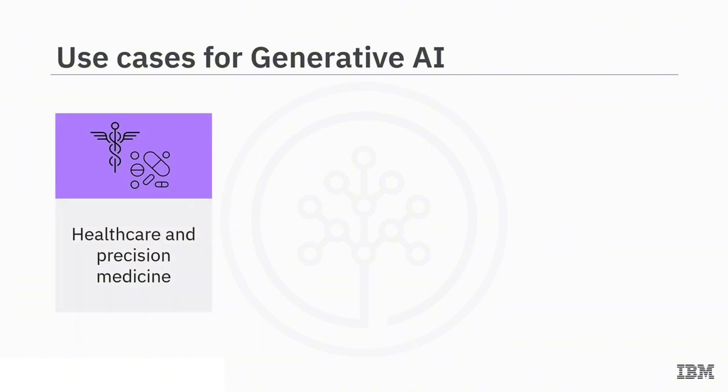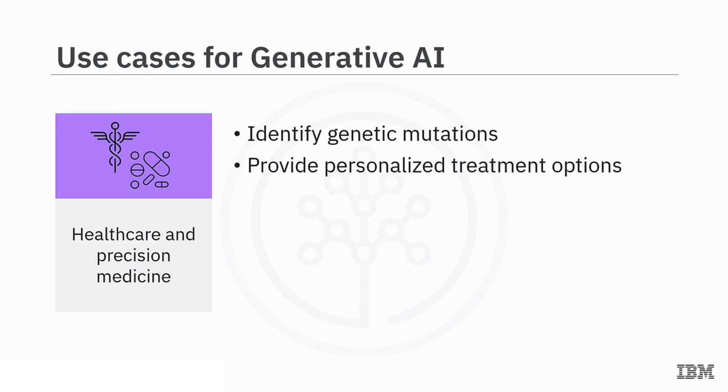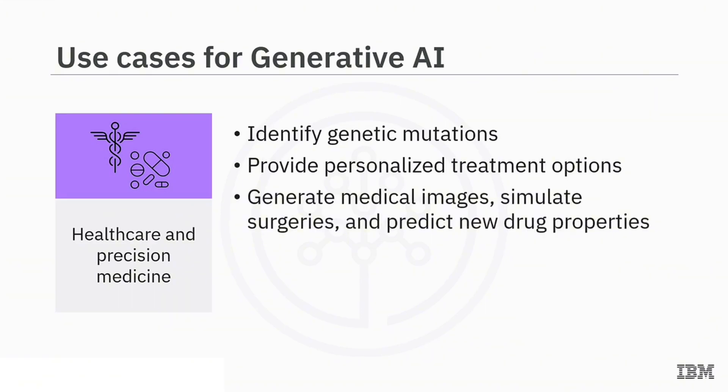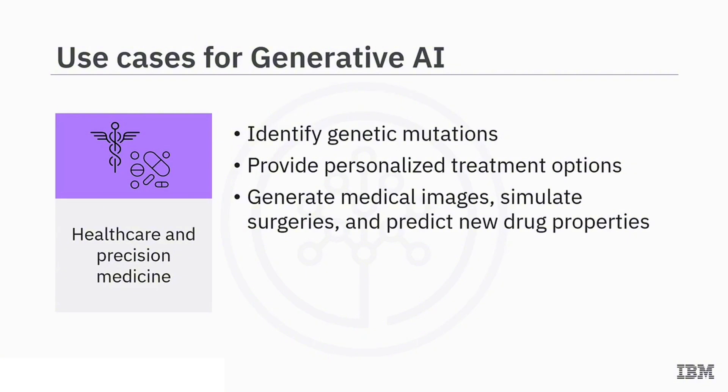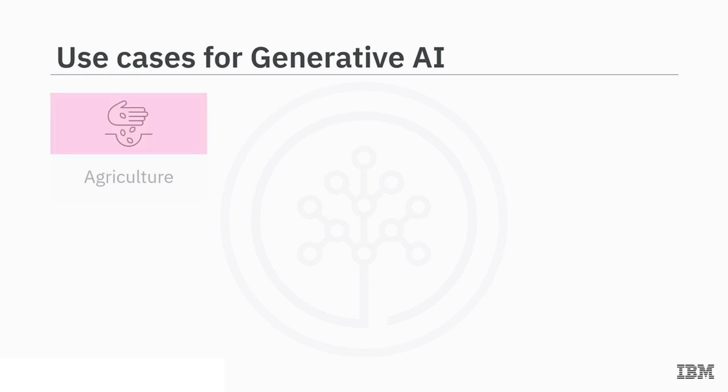In healthcare and precision medicine, generative AI can support physicians in identifying genetic mutations responsible for patients' illnesses and providing tailored treatments. It can also produce medical images, simulate surgeries, and predict new drug properties to aid doctors in practicing procedures and developing treatments.